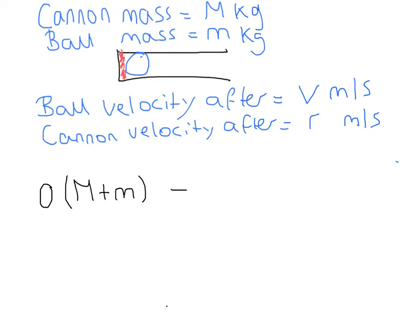So now let's look at after the collision. Now what it tells you is the ball velocity after is v. So that means the momentum of the cannonball would be mv. And the momentum of the cannon, therefore, would be the recoil velocity. Hang on, let's stick to doing it in the same order. So we've got big M multiplied by r.